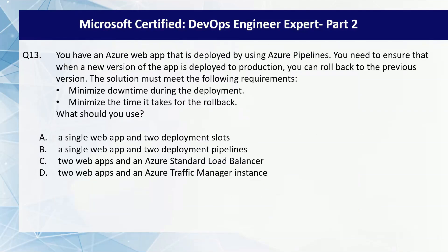Next question. You have an Azure web app that is deployed by using Azure Pipelines. You need to ensure that when a new version of the app is deployed to production, you can roll back to the previous version. The solution must minimize downtime during deployment and minimize the time it takes for rollback. What should you use? Your options are: a single web app and two deployment pipelines; two web apps and an Azure standard load balancer; two web apps and an Azure Traffic Manager instance.